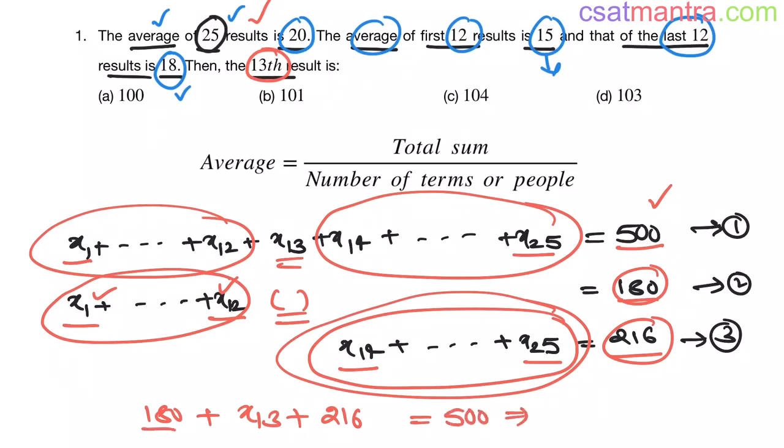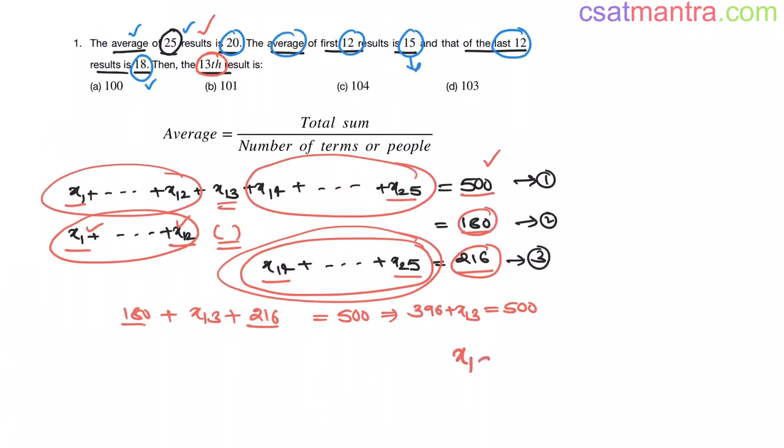Now this is 180 plus 216 that is 396 plus x13. This equals 500. Now x13 is 500 minus 396. This is 104. So our answer is C.